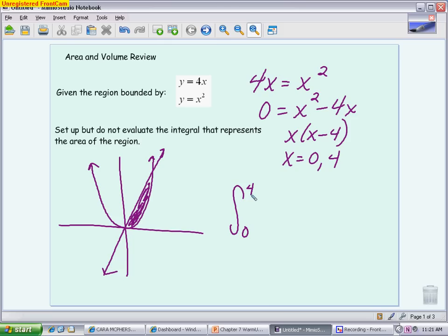And then it's just top minus bottom. So, in this case, the top curve is your line, so 4x. Your bottom curve is your parabola minus x squared. And this is the final answer for the area piece. Obviously, if you wanted a numeric answer, you could use your calculator. You could even do this one by hand. It wouldn't be too bad.